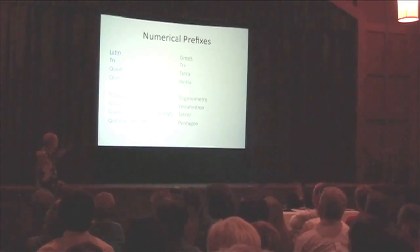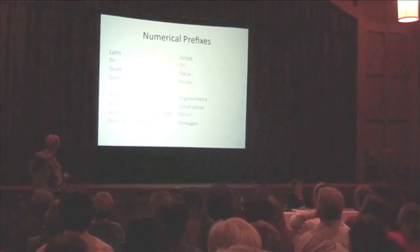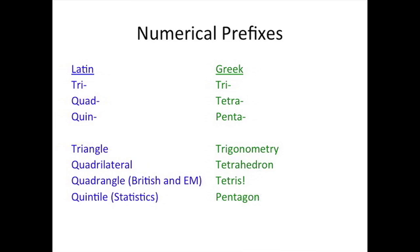My grandfather always said normal is what's right, and there are math terms corresponding to that. So right angle means that. Then there are prefixes — Latin and Greek. Kind of interesting. Quadrilateral is what we say.